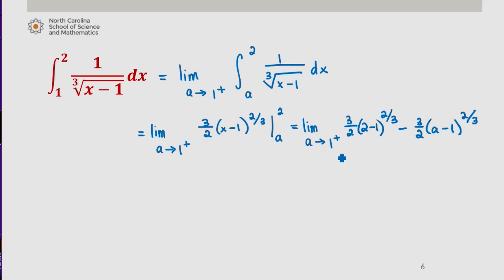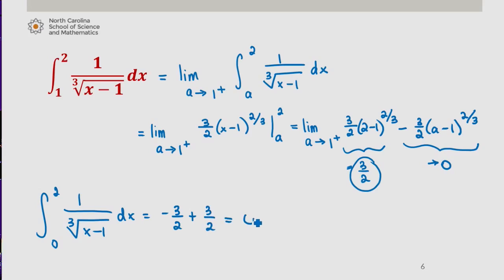We note again as a approaches 1 from above, this term goes to 0, this term equals 3 halves, so this second integral equals 3 halves. Now since both integrals converge, so does their sum, and what we found is that their sum gives us negative 3 halves from before plus the 3 halves we see here, we get an integral of 0.